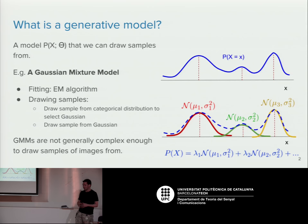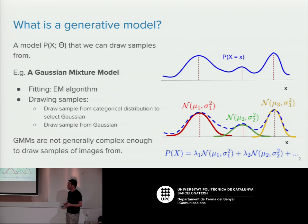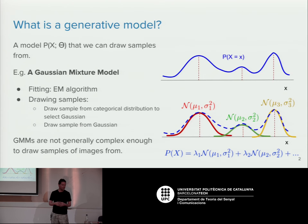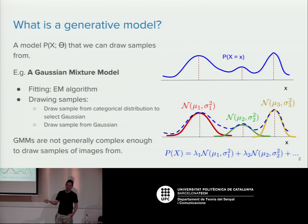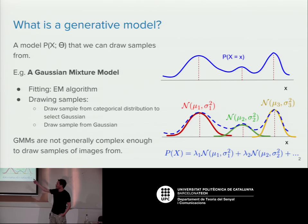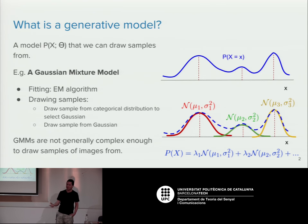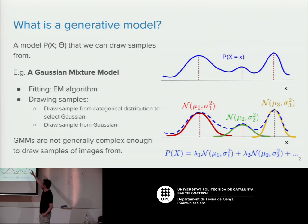A generative model is a model — either explicit or implicit — of a probability distribution that you can draw samples from. It's a model of P(X) given some parameters that we can somehow sample from. A classic example of this is a Gaussian mixture model, which I've shown on the right.